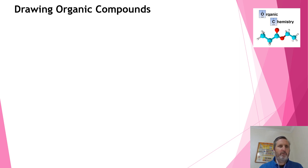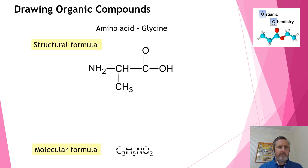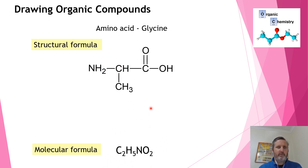The first thing I want to touch on is how we draw organic compounds. Here's an example — this is the structural formula of glycine, an amino acid. We can also draw its molecular formula, which shows just the atoms and a number beside them indicating how many there are. The structural formula is very good at showing us how all the atoms are joined, while the molecular formula just gives us the ratio.